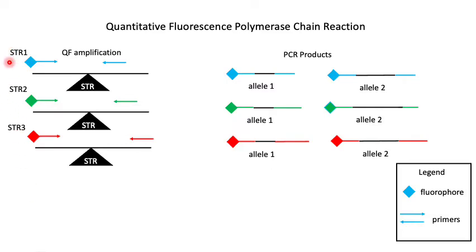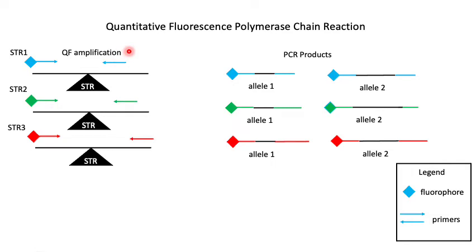In QF-PCR, one of the two primers that amplify the STR is labeled with a fluorophore. Fluorophores are represented by colored diamonds and primers by colored arrows on this slide, while STRs are represented by black triangles. We can amplify three different STRs by using different colored fluorophores for our primer sets. Strategic placement of the primers to increase or decrease the size of PCR products can be used for further multiplexing, illustrated by moving the reverse primer further downstream from the STR.